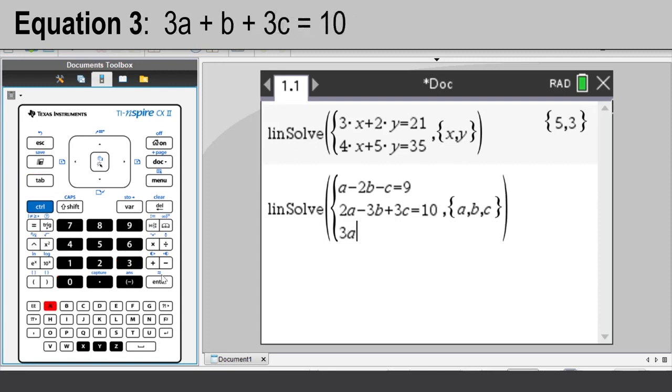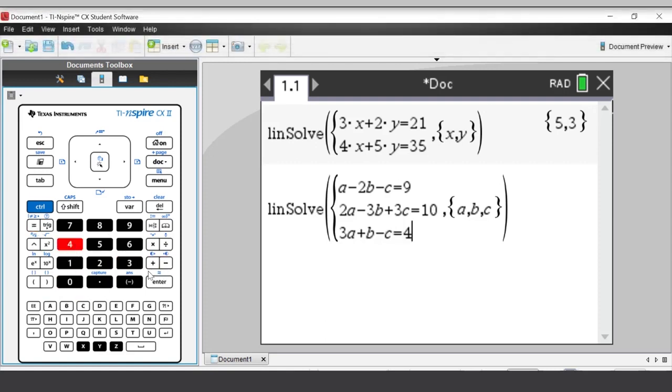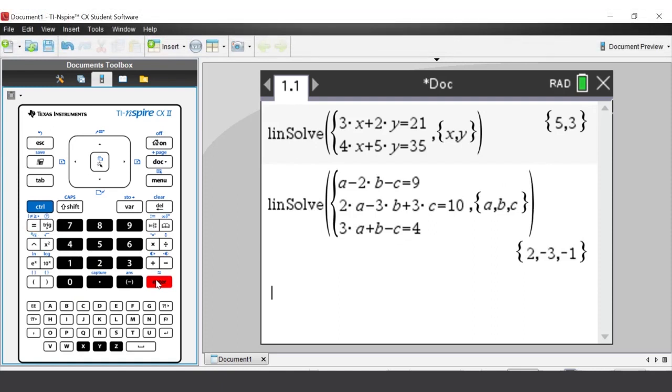3A add B subtract C is equal to 4. Press ENTER. A is equal to 2, B is equal to negative 3, and C is equal to negative 1.